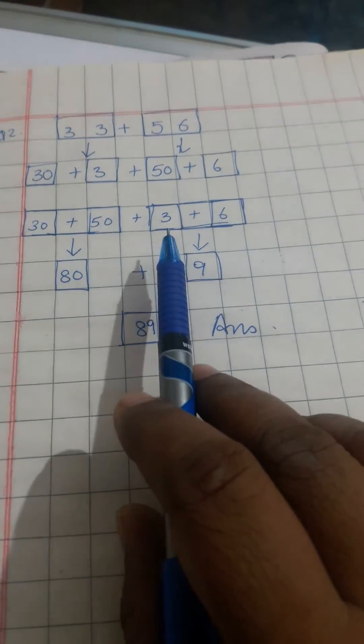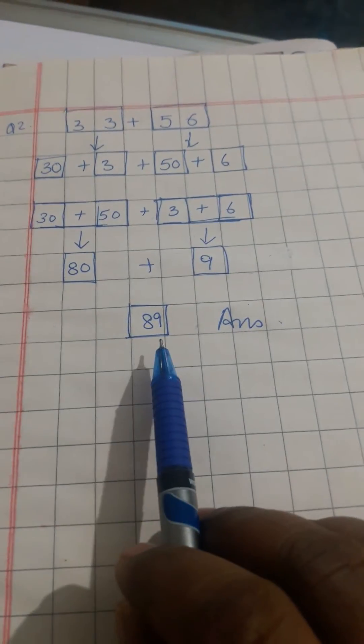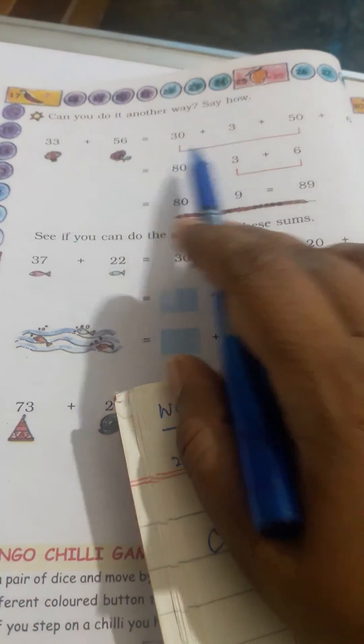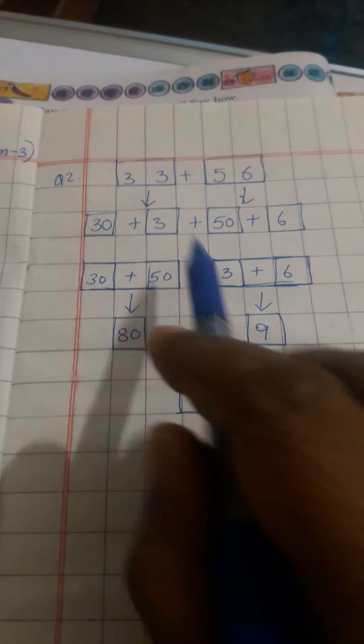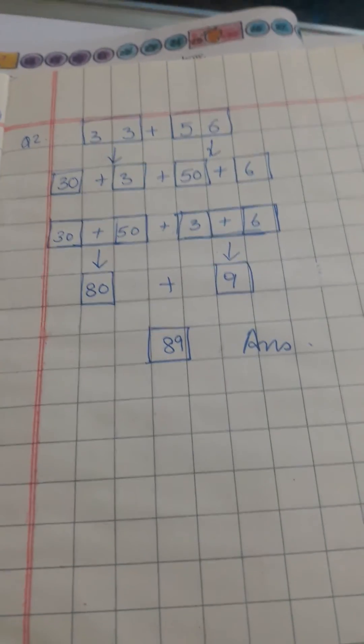So 80 plus 9 will be 89. So you can use any method to solve it, either you can add like this 30 plus 50 together, or you can place the numbers together, tens numbers together and ones numbers together, and add. Thank you.